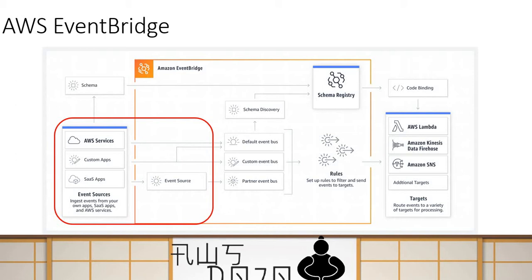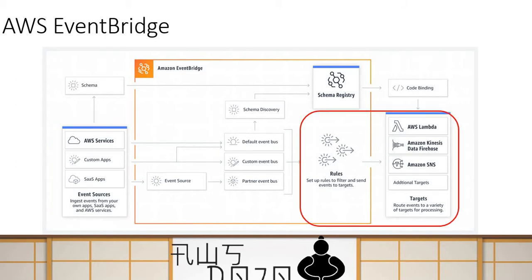Sources are the services, applications, and partner solutions which can publish the message to the EventBus. Now comes the part where you consume the message. Once messages are published to the EventBus, you can create multiple rules. These rules are then used to route the message to one or more subscribers. Your rule could be based on the source of the message, the content of the message, or the type of the service.